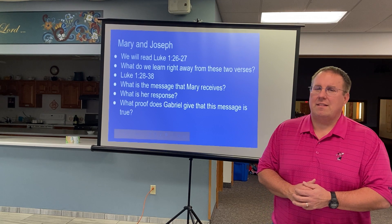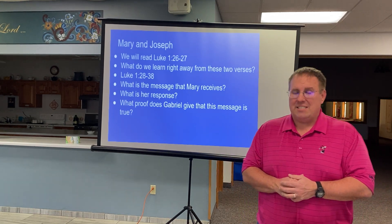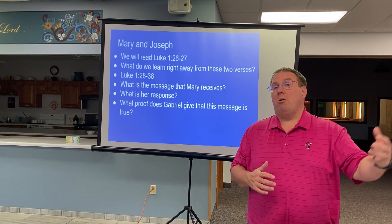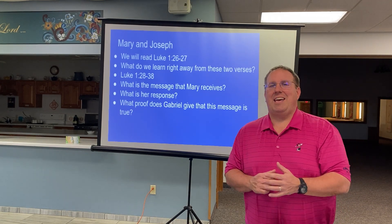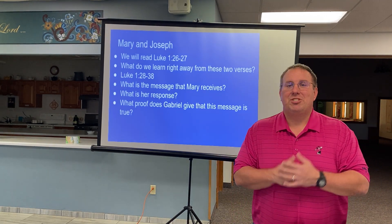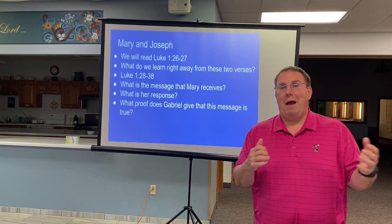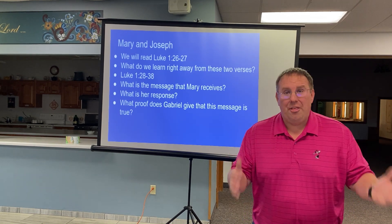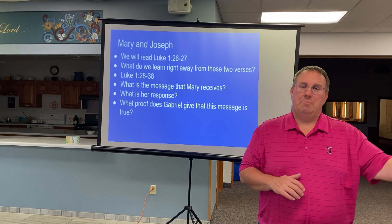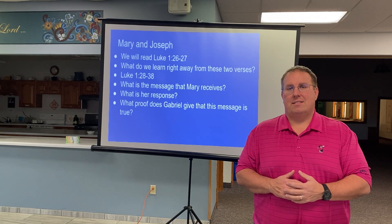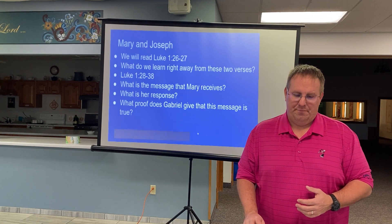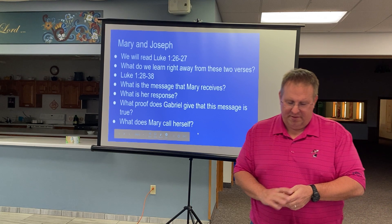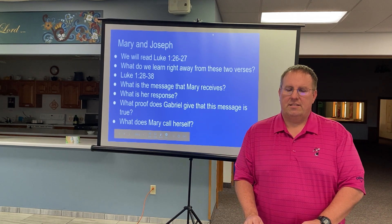What proof does Gabriel give that this message is true? Her cousin Elizabeth is pregnant, and she was supposed to be barren. We've met this character before — last class — John the Baptist. That's right. John the Baptist and Jesus are cousins. So Gabriel says, 'For nothing will be impossible with God.' Elizabeth is the sign of that, and Mary will be as well. And Mary calls herself a servant.